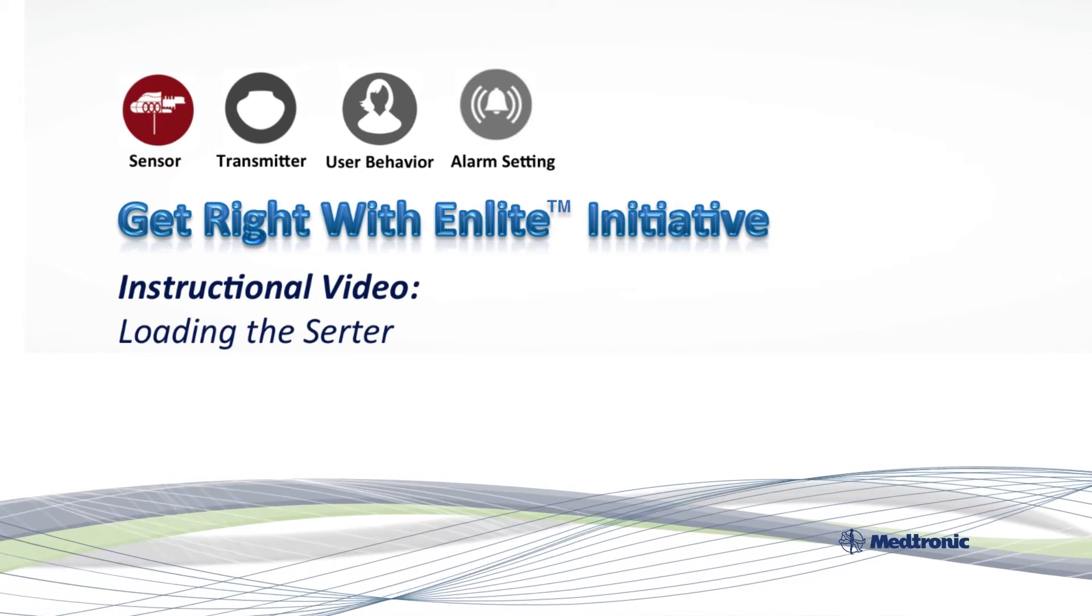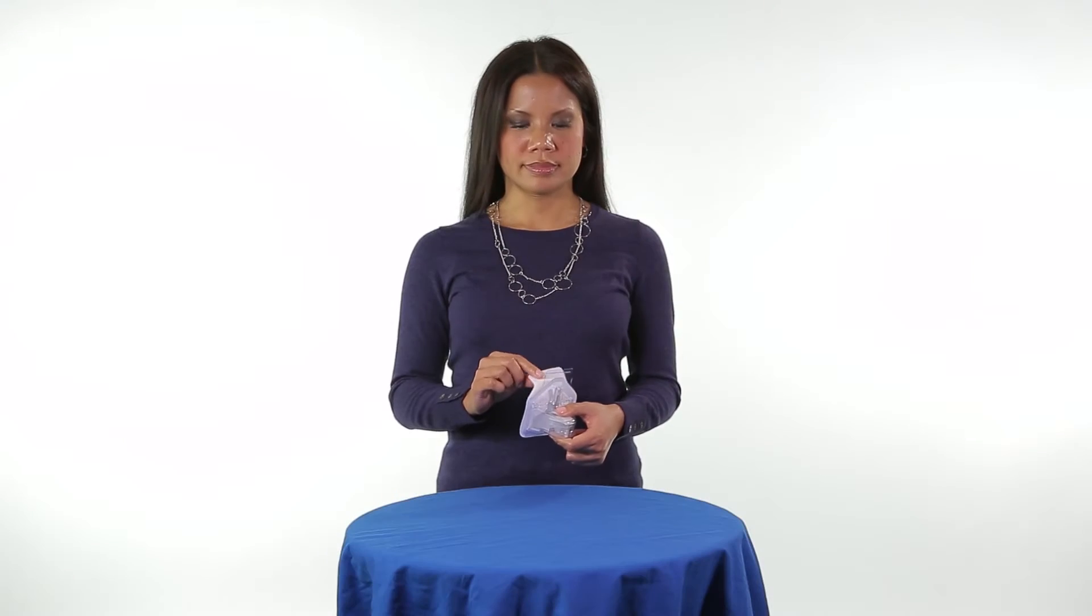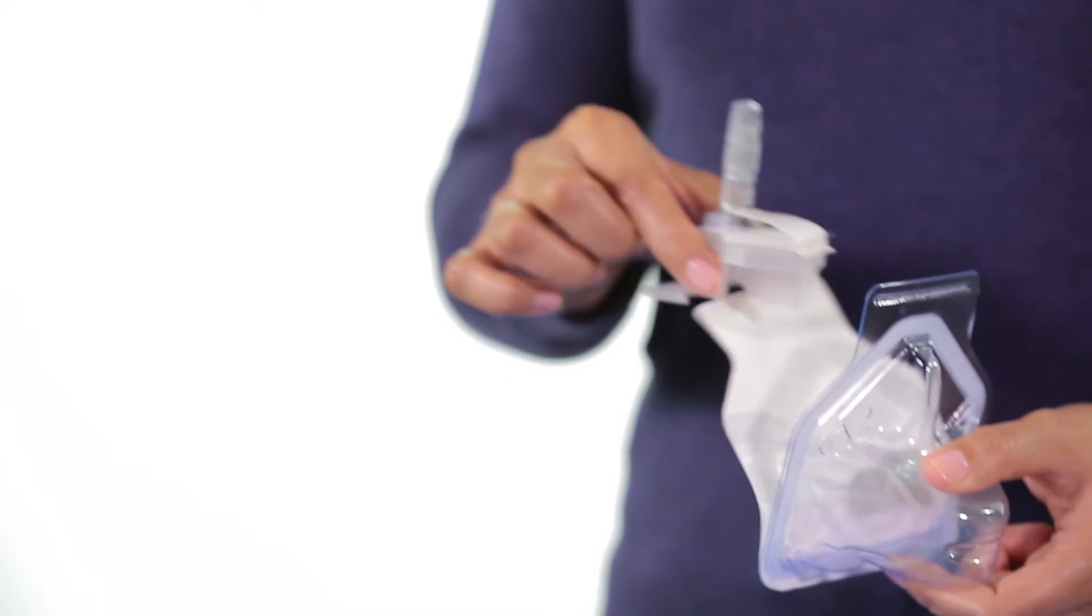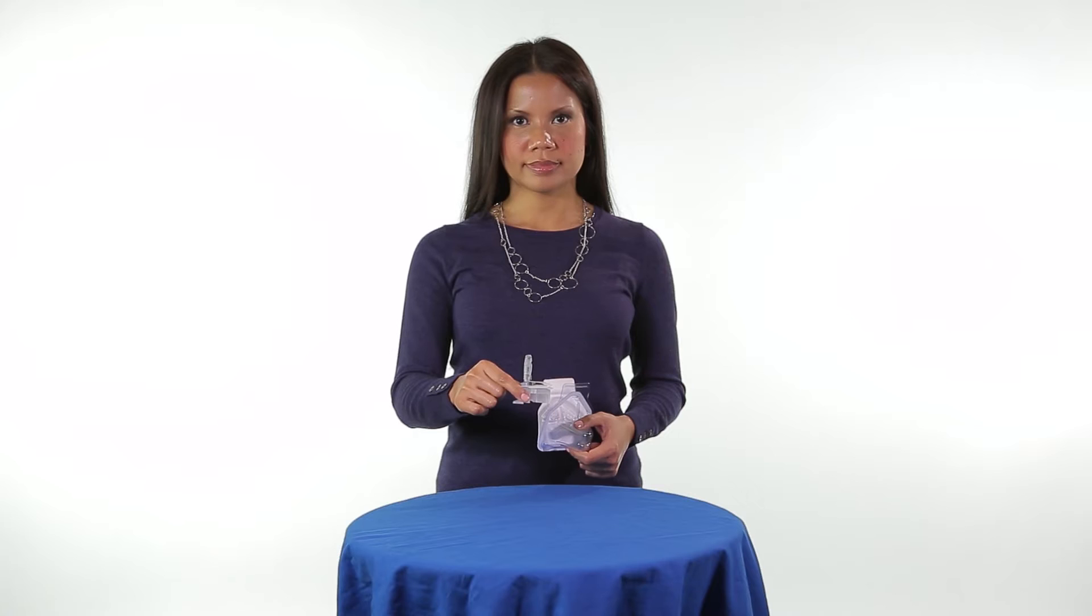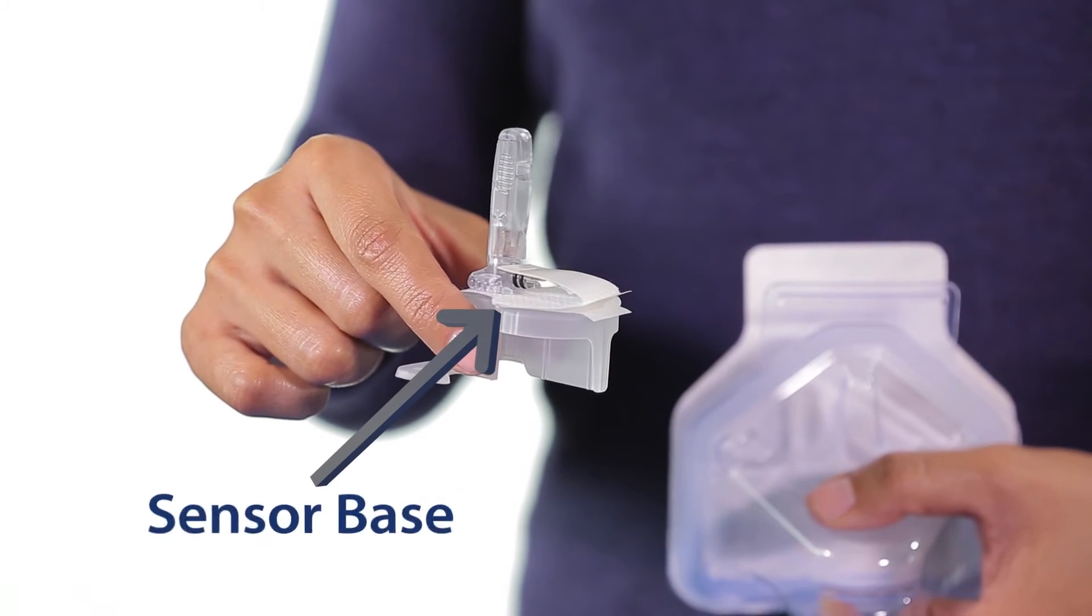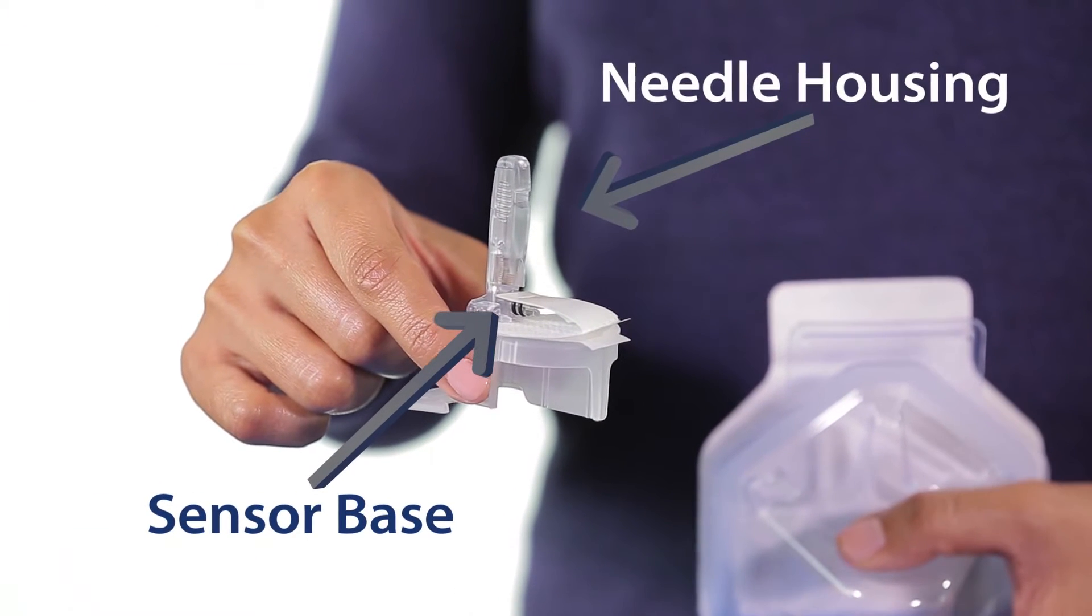Now let's talk about loading the sensor into the SIRTA. When removing the sensor from its packaging, you should hold the sensor by the plastic pedestal only. It is important that you don't hold it by the sensor base or needle housing, as this could damage the housing.